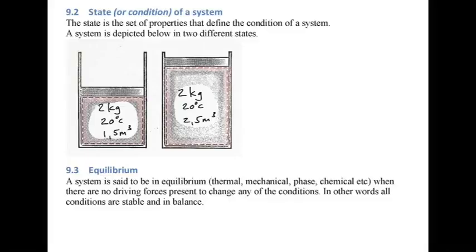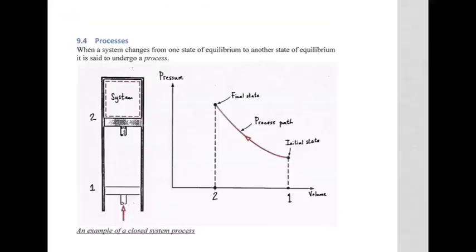We'll also see the word 'equilibrium' used, which simply means the system is stable — when there are no driving forces present to change any of the conditions. In other words, the temperature and pressure are not changing; all conditions are pretty stable and balanced. A system can go from one state of equilibrium to another, and this change from one state of equilibrium to another is called a process.